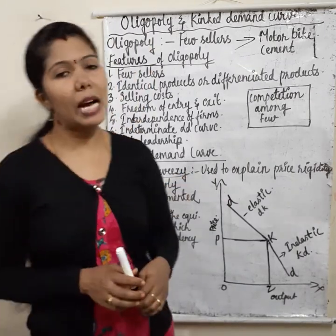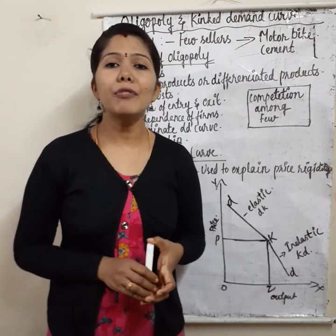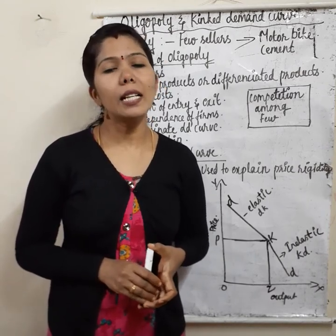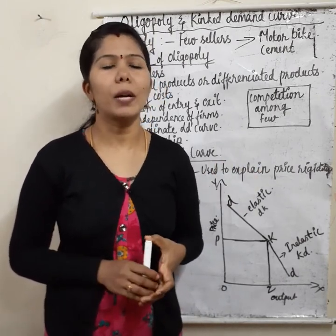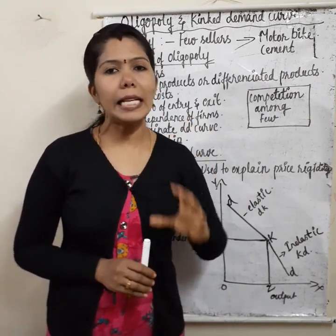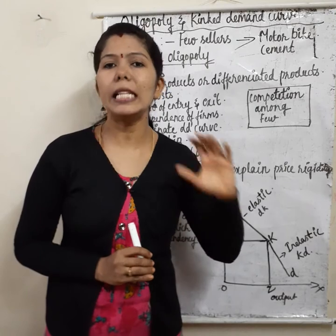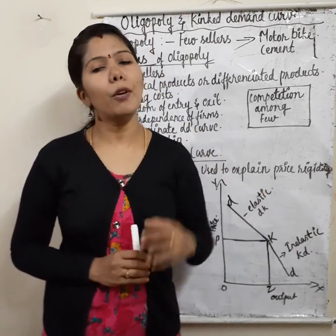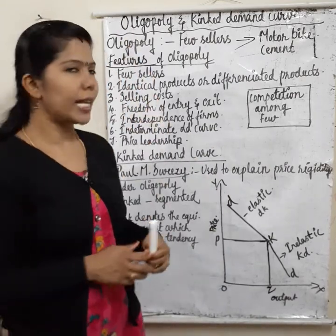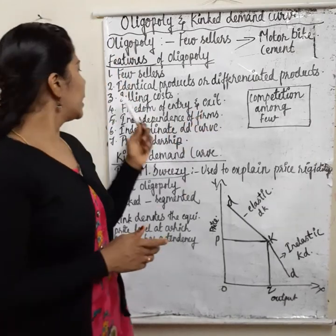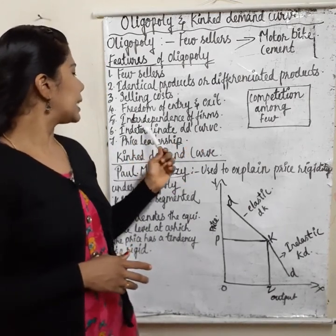The last and most important feature of oligopoly is price leadership. Under oligopoly, one leader firm decides the price and takes decisions, and other firms follow the leader firm. To recap, the features of oligopoly are: few sellers, identical or differentiated products, selling cost, freedom of entry and exit, interdependence of firms, indeterminate demand curve, and price leadership.